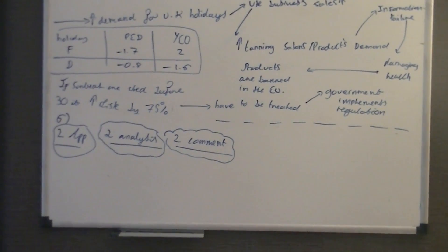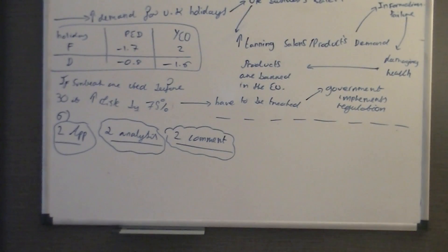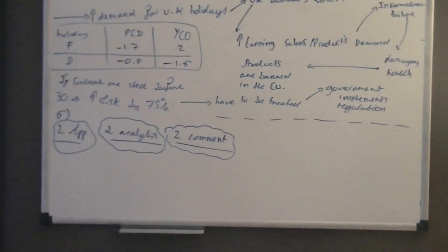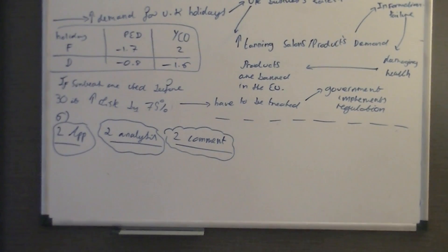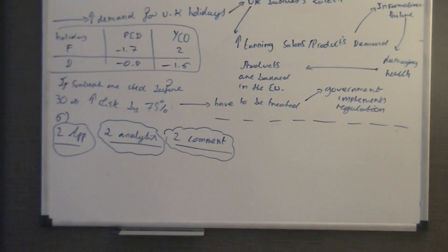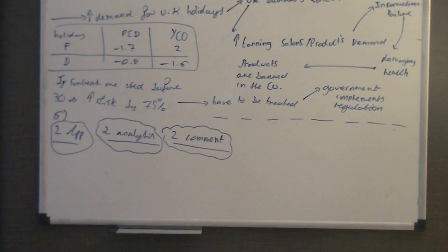This is question six for the OCR AS Economics video, past paper June 2030. Now, this question is a six marker. As you can see on the board, I've labeled it out: two marks for application, two for analysis, and two for comment. So how can we use this to answer this question? The question says comment on the likely impact of consumers' information failure in sunbeds and acceleration products.